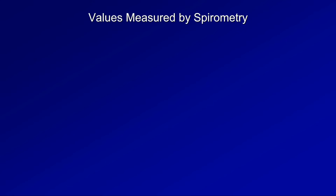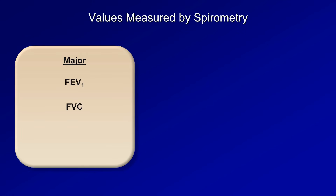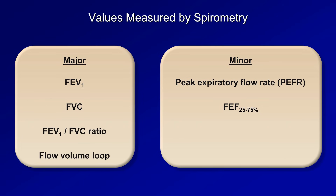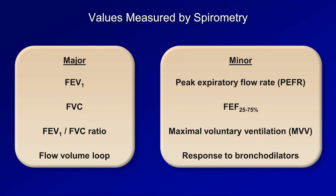In summary, the major values measured by spirometry are the FEV1, FVC, the FEV1 to FVC ratio, and the flow-volume loop. Minor values include the peak expiratory flow rate and the FEF25-75, which is the average flow from when 25% of the FVC has been exhaled to when 75% has been exhaled — historically used to detect small airway obstruction, though some experts argue this association is overstated. There is also the maximal voluntary ventilation, or MVV, the maximum air inhaled and exhaled within one minute. Finally, spirometry can be repeated after administering a bronchodilator to assess for any response.